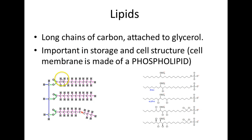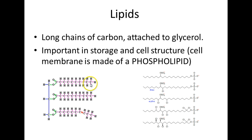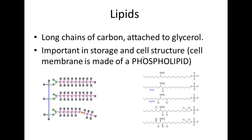Lipids — you have to know that they're long chains. Every time there's a kink or vertex, that represents a carbon. You have to be able to identify either a straight-chain or kinked-chain form. They are long chains of carbon attached to a glycerol or other compound. Lipids are important in storage — we store our food as fat, and lipids are fats. They're also important in cell structure because cell membranes are made of phospholipids, which are lipids. Lipids are involved in storage and structure.